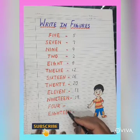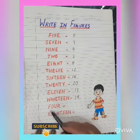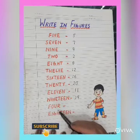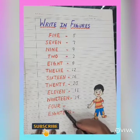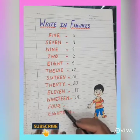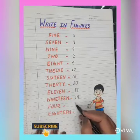Now let's find out the next number name. F, O, U, R — 4. So let's write 4.